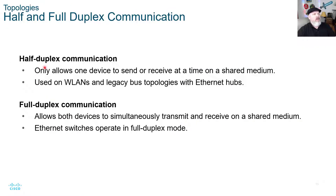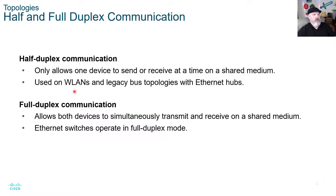Two terms you need to know: half duplex communication only allows one device to send or receive at a time on a shared medium, and is used on WLANs and legacy bus topologies with Ethernet hubs. Think of it as two people talking where only one can talk at a time. Full duplex communication allows both devices to simultaneously transmit and receive on a shared medium — Ethernet switches operate in full duplex mode, which is much better than half duplex, though there are still instances where half duplex is in use.